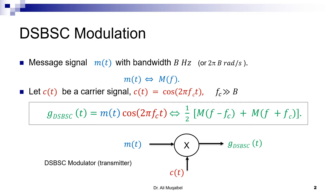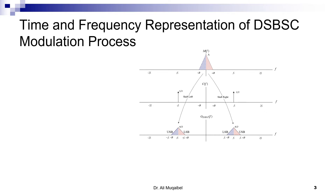In the frequency domain, the message has bandwidth B. Multiplying by the carrier — which is two deltas — gives convolution, producing two images of the original spectrum shifted to ±fc. The part that was at B is now at fc+B, and the part at −B is now at fc−B. The amplitude, which was A, is now scaled down by a factor of one half, becoming A/2. Multiplying by a carrier performs this shifting operation.